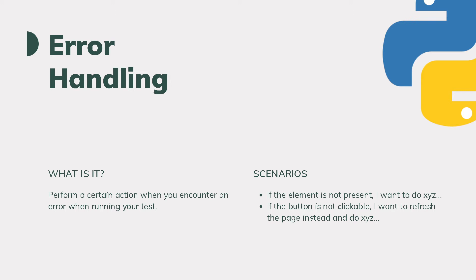So instead of just throwing the error and failing the test, you would want to do something else instead. For example, if you're trying to find an element and that element is not there, you might want to verify some text or retry the entire scenario depending on your use case. Or if you're trying to click on a button and the button is not clickable, you might want to refresh the page and try something else. These are unique scenarios you might run into, specifically if you're working on a really dynamic application.